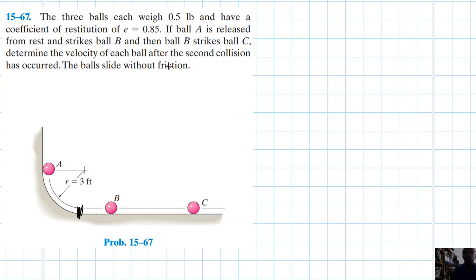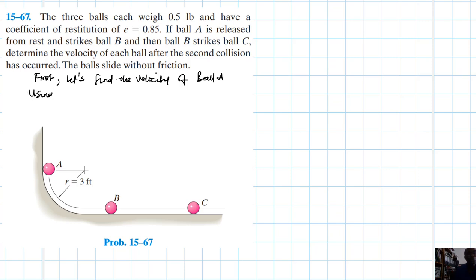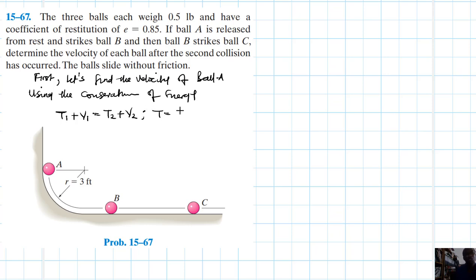Let's find the velocity of ball A. We're going to use conservation of energy. We have T1 plus V1 equals T2 plus V2, where T is equal to one-half m v squared, and V is equal to mgh plus the elastic potential energy term.